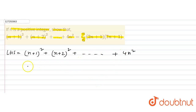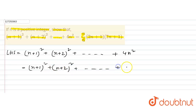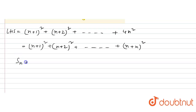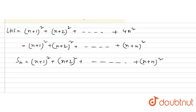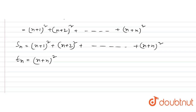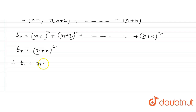We look at this as a sum. The sum goes from (n+1)² + (n+2)² + ... up to (2n)² terms. We define S_n as equal to (n+1)² + (n+2)² + dot dot dot + (2n)². We say the general term t_n equals (n+r)² for the r-th term.